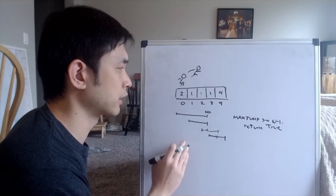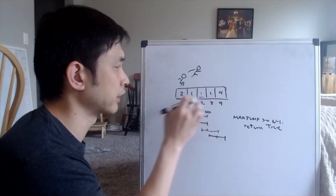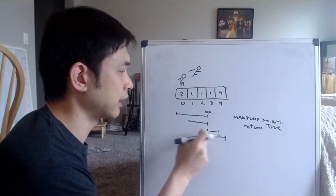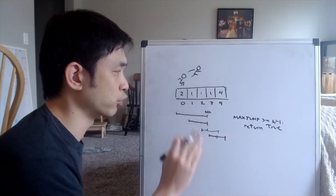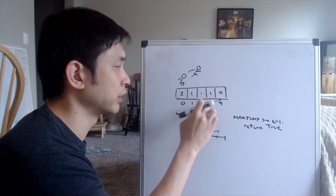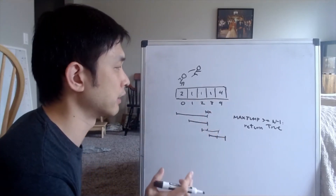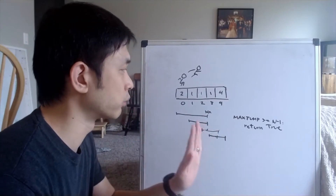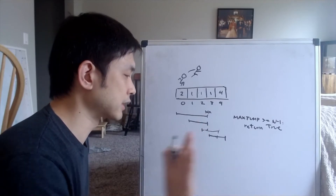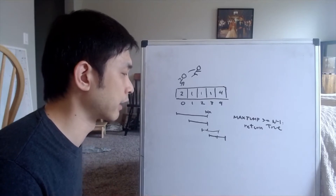If this max jump is greater than the current index we're on, we know we can get here. So this is just a greedy method where we're only storing what really matters — the maximum amount that we could jump. There's no reason to have a DP array or anything like that.